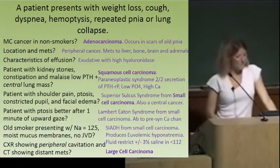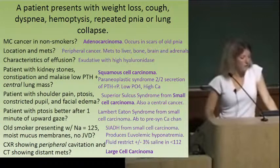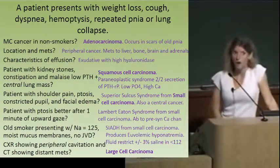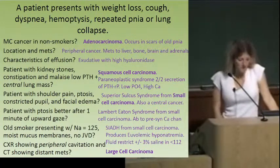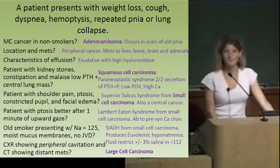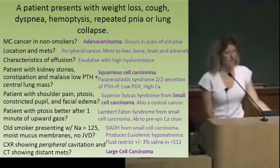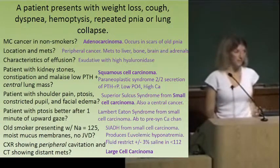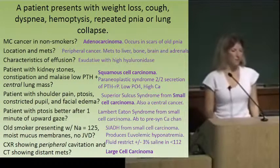Old smoker with low sodium, moist mucous membranes, and no JVD — that's SIADH from small cell carcinoma. Chest x-ray showing peripheral cavitation with widely disseminated metastasis on CT: that's large cell carcinoma. Large cell is peripheral, more likely to cause cavitation, and usually pretty metastatic upon diagnosis.